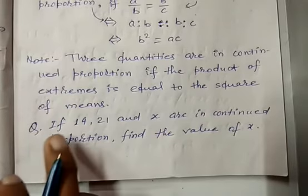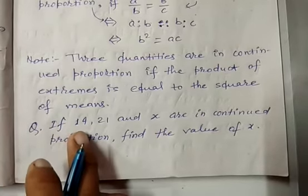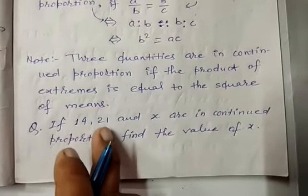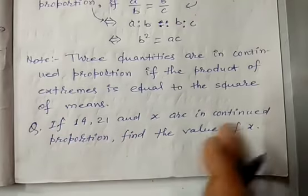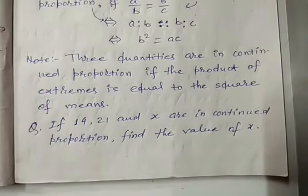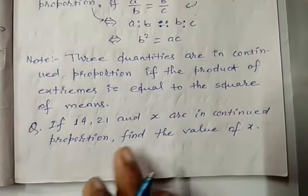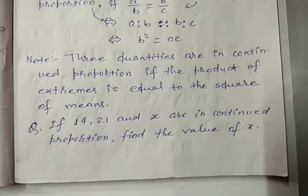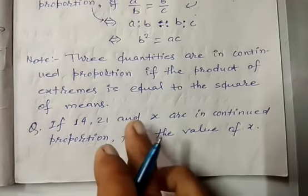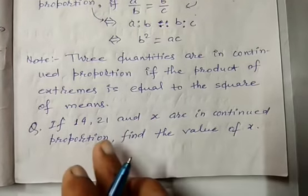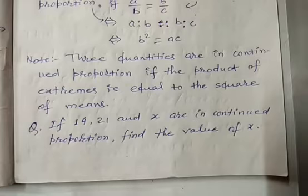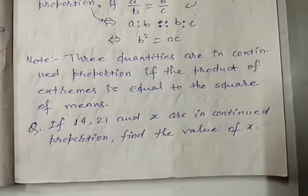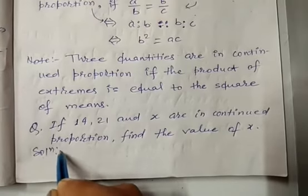Now let's understand from some questions. Question: If 14, 21, and x are in continued proportion, find the value of x. यह question कह रहा है कि तीन quantities हैं — 14, 21, और x — जो continued proportion में हैं।